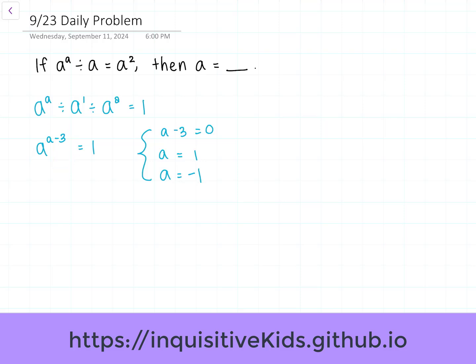Now, if a minus 3 was equal to 0, then a would be equal to 3. So the answer to this problem is if a is equal to 3 or plus or minus 1.